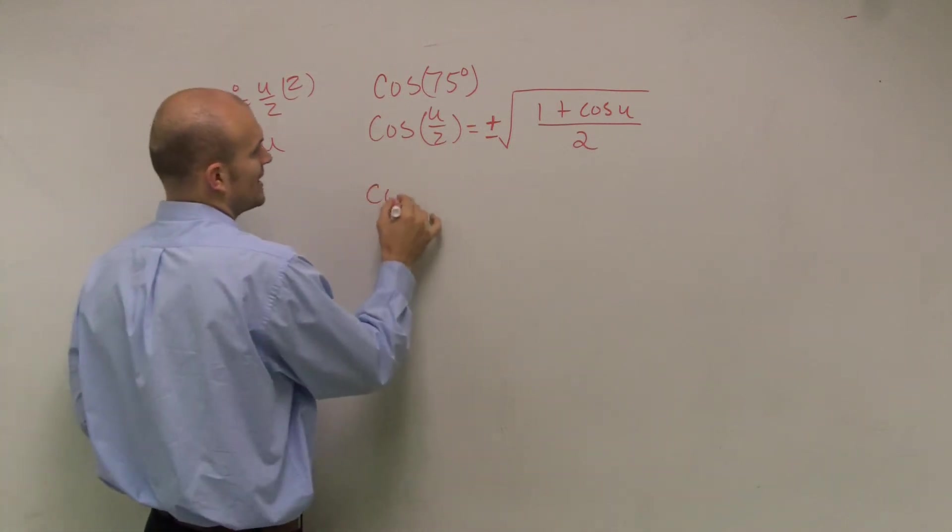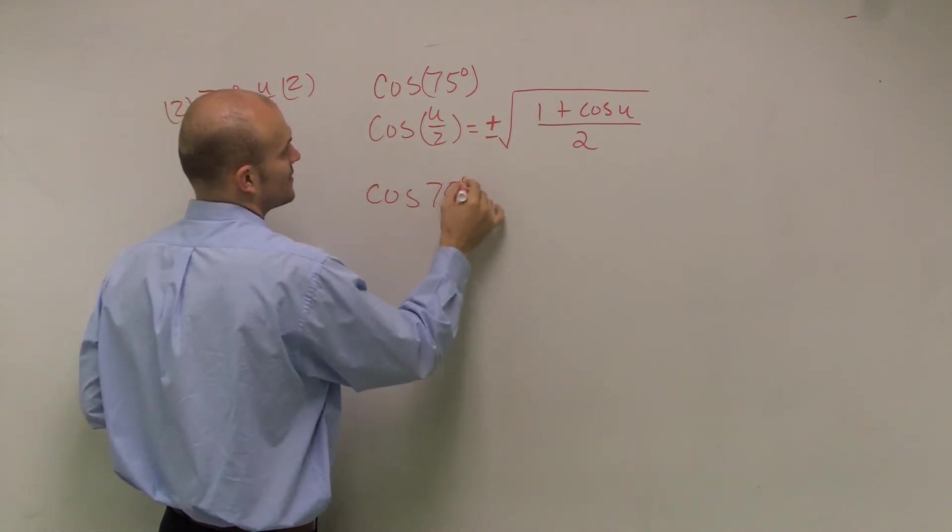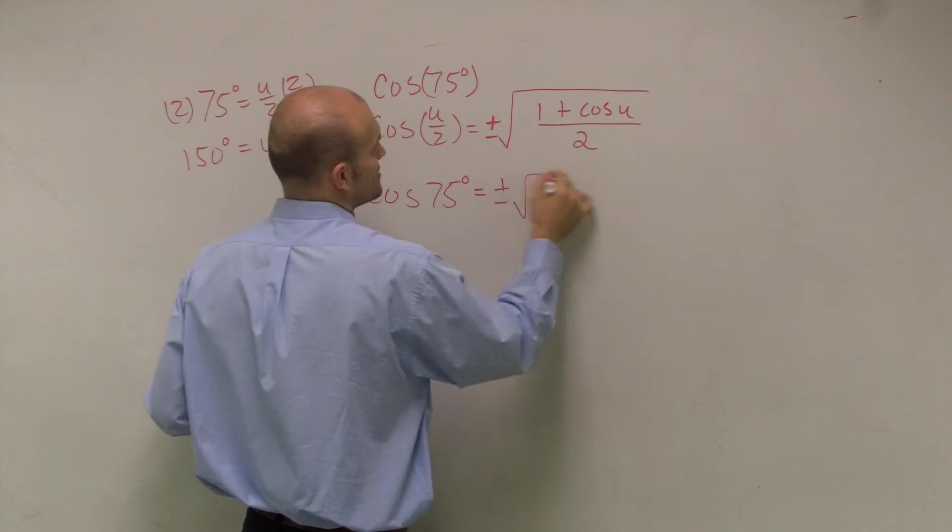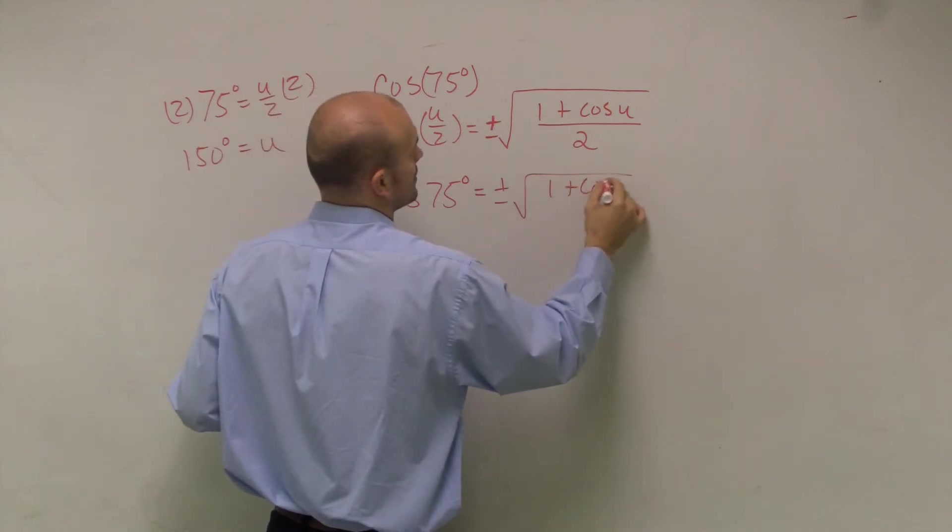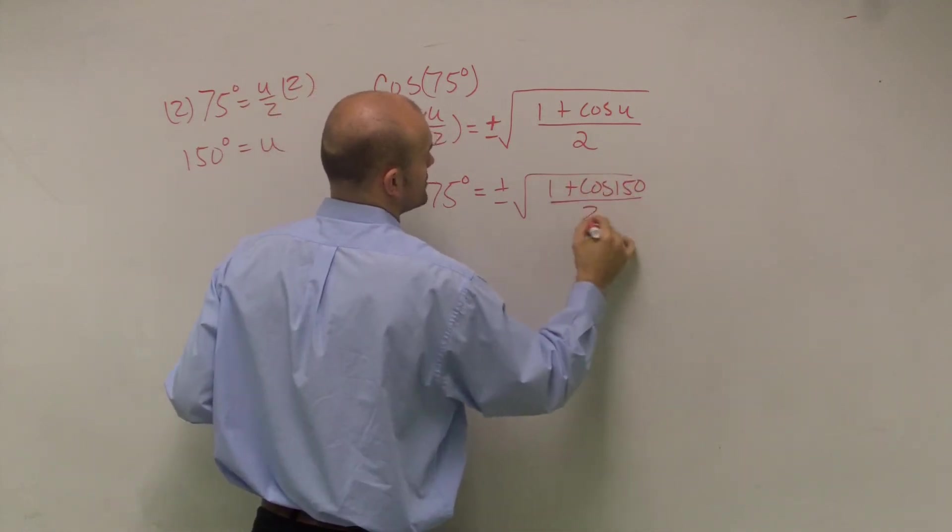So now what I can do is plug that in. So cosine of 75 degrees equals plus or minus radical 1 plus cosine of 150 degrees all over 2.